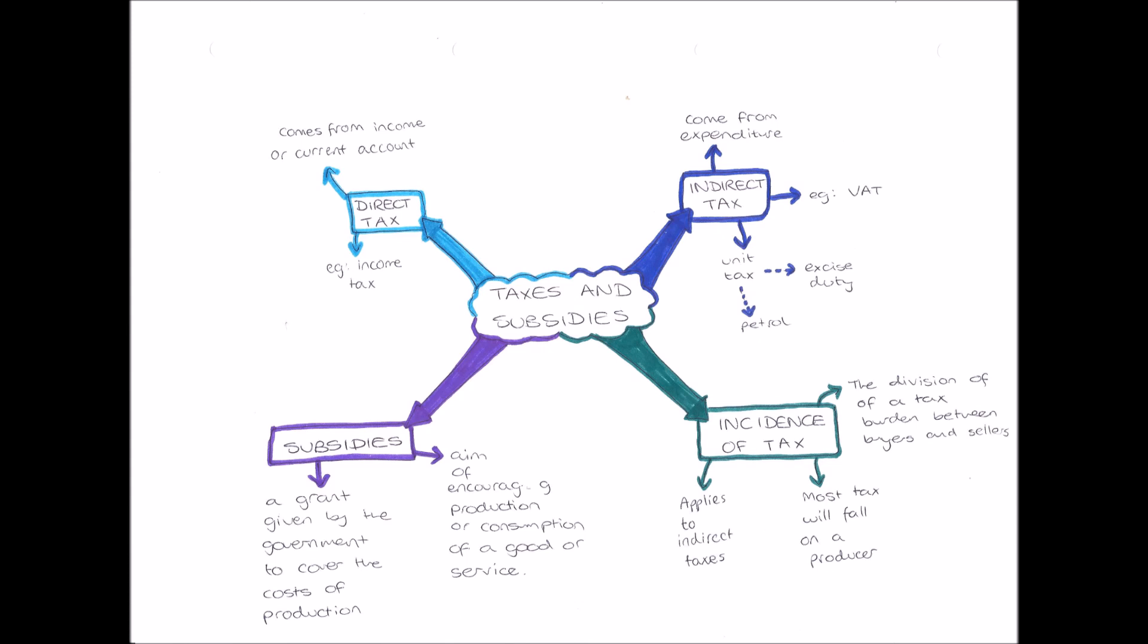have to pay to the government to finance government spending. So it's an amount of money which is either taken from us or we give to the government to finance their spending. And we have two types of tax: